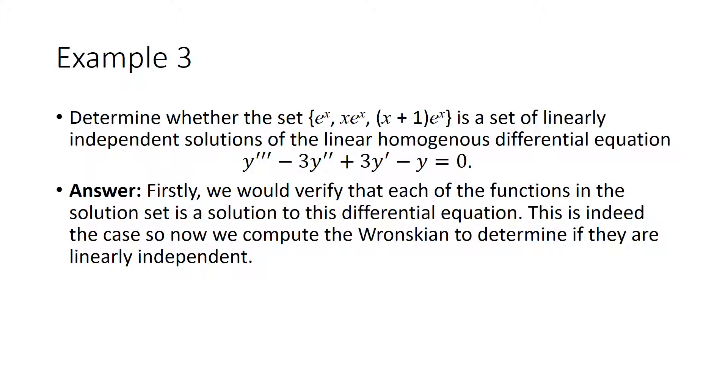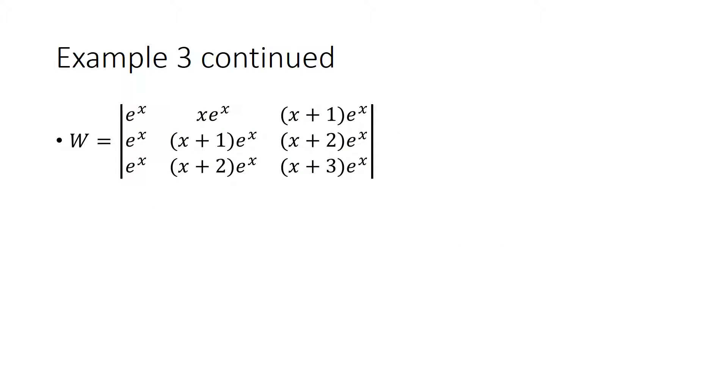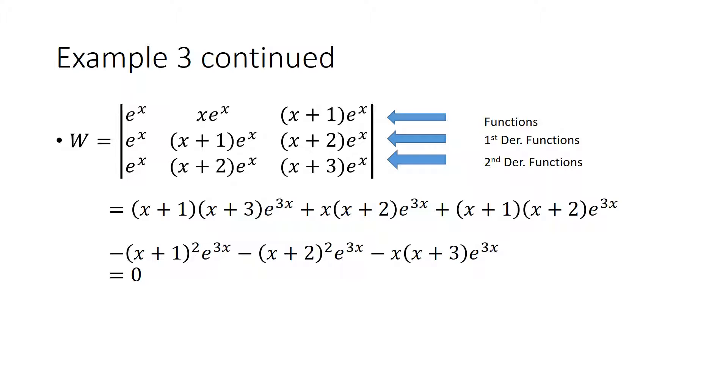And now that when this is completed, we can go ahead and compute the Wronskian. Here we have our Wronskian with our functions on the first row from our set. The first derivative functions make up the second row in our matrix and the second derivative functions will make up the third row in our matrix. We go ahead and compute the determinant and we end up with zero.